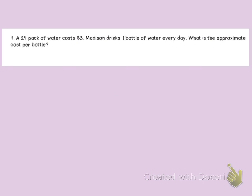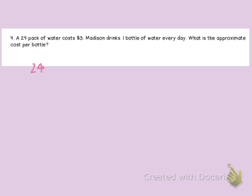We have one more. A 24-pack of water costs $3. Madison drinks one bottle of water every day. What is the approximate cost per bottle? 'Per bottle' means one bottle — we know how much 24 costs, so let's find out how much just one bottle costs. We have 24 bottles, so let's write our words first: money over bottles. We have $3 over 24 bottles.